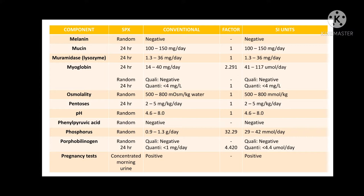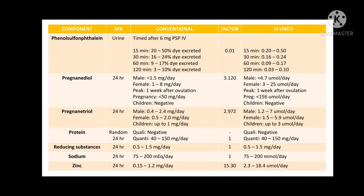Do not forget that the best specimen for a pregnancy test is your concentrated first morning urine. Under phenolsulfonphthalein (PSP), urine is timed after 6 milligrams of PSP is administered intravenously. After 15 minutes, 20 to 50% of the dye can be excreted; 30 minutes is 16 to 24%; 60 minutes is 9 to 17%; and after 120 minutes, 3 to 10% dye is excreted. The conversion factor used is 0.01.